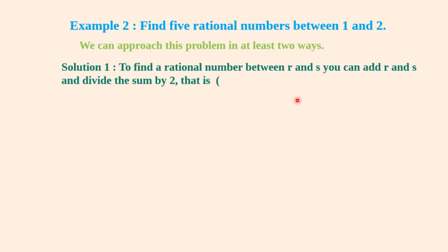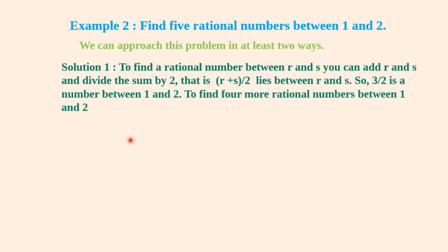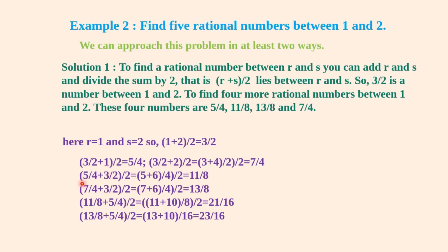So 3/2 is a number between 1 and 2. You can proceed in this manner to find four more rational numbers between 1 and 2. These four numbers are 5/4, 11/4, 11/8, 13/8, and 7/4. Here r = 1 and s = 2, so (1 + 2)/2 = 3/2. Similarly, you can do like this.